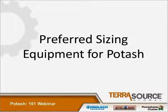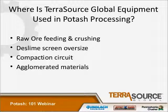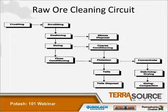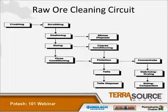Preferred sizing equipment for potash — where is TerraSource equipment used in potash processing? Raw ore feeding and crushing, the slime screen, the slime screen oversize, compaction circuit, and agglomerated materials. You can see in this slide that crushing in the upper left-hand corner uses roll crushers or impact crushers. You can also put screens in this circuit, and oversized tailings can also be sized.